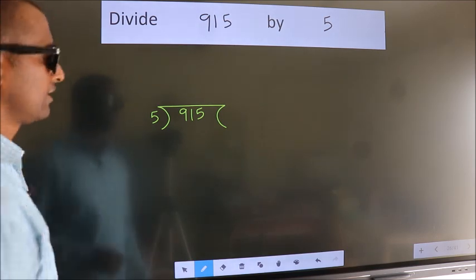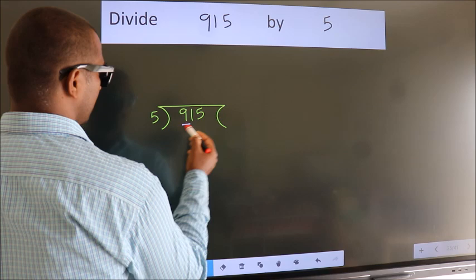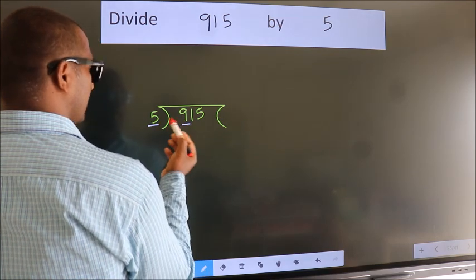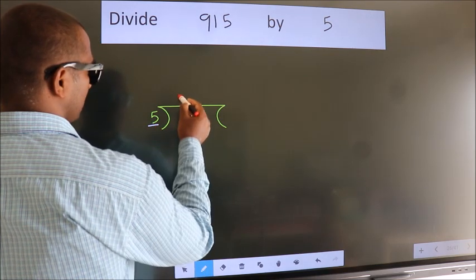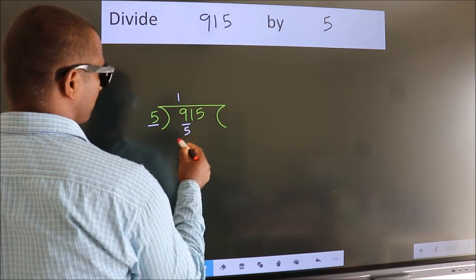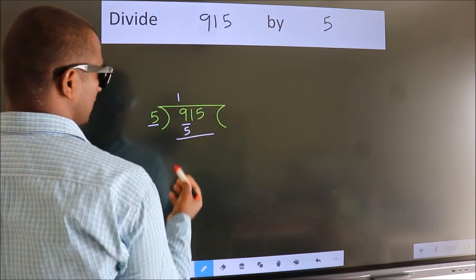Next. Here we have 9, here 5. A number close to 9 in the 5 table is 5 once 5. Now we should subtract.